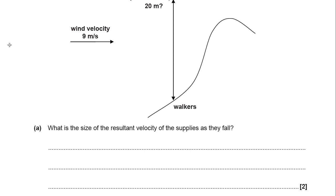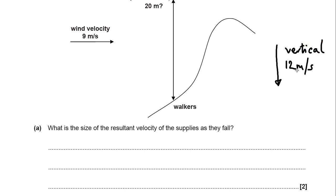I'll give you a little tip. There are actually two methods you can use to do this. You've got a horizontal velocity of 9 metres per second and a vertical velocity of 12 metres per second. You can either do that by scale drawing, or you can use a triangle method to calculate the resultant velocity. You're only asked to work out the size — you are not given any angles, so you do not need to do trig. Think about the other triangle method you could possibly use. Pause the video, have a little go, and then start the video again and I'll show you what you could have done.